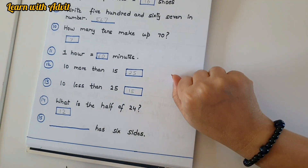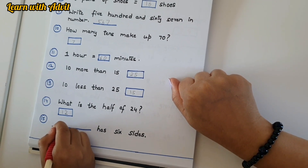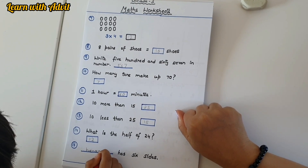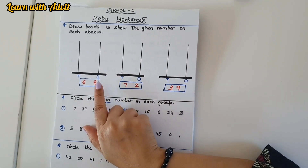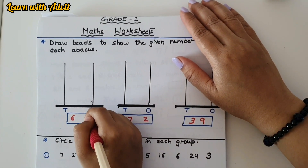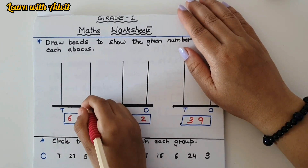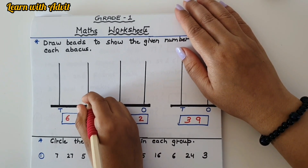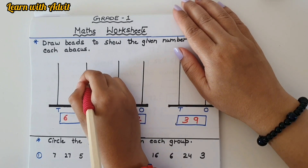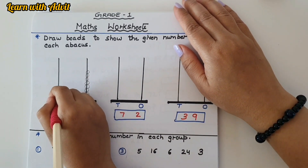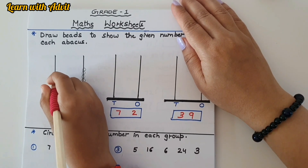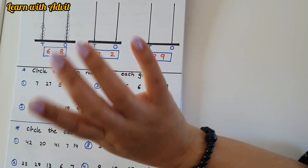Which shape has six sides? Hexagon — very good! Is a hexagon a 2D shape or 3D shape? A hexagon is a 2D shape. Now you have to draw the beads on the abacus according to tens and ones. The number is 68, so the ones place needs eight beads and the tens place needs six beads. Ones: 1, 2, 3, 4, 5, 6, 7, 8. Tens: 1, 2, 3, 4, 5, 6 — good!